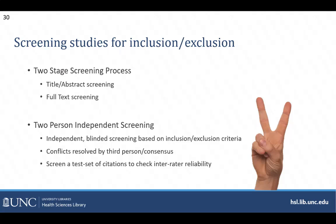You'll also want to make sure at both of those stages that you have two people independently screening each of those studies. That screening is blinded so that neither reviewer knows the other reviewer's decision. And where there are conflicts — where one person says to include and one says to exclude — you can resolve with a third person who again does a blinded screening.